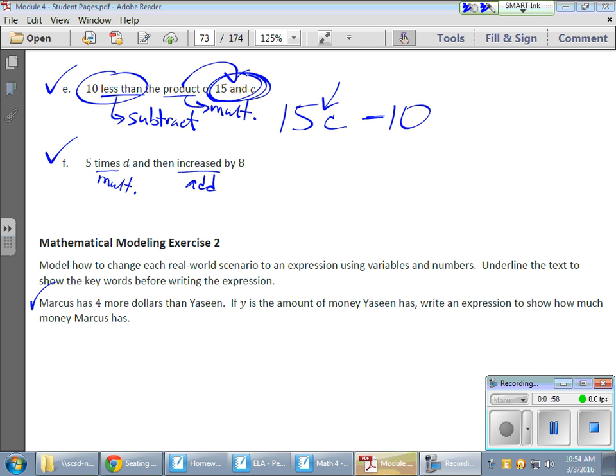This way I don't mess up. So 5 times d, and then increased by 8. Increased means to add. So I'm going to do what it says here: 5 times d. I like circling things as well, the things that need to go together. 5 times d. There's my 5 times d, and then I'm going to increase that or add that by 8, and so I'll show adding 8 by a plus sign, and then 8. So there's that expression.